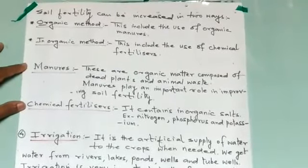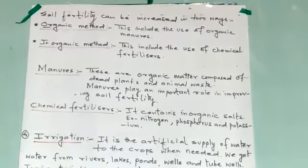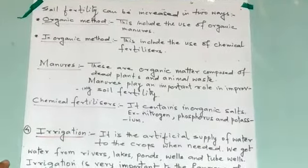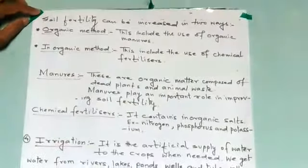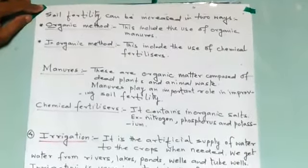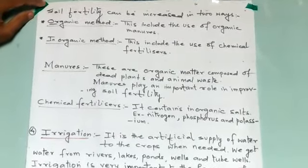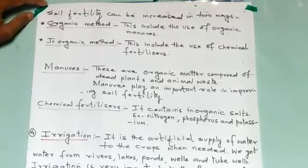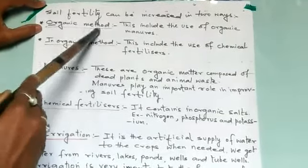Welcome students. In the previous video I told you about the method of cultivation — how the lost nutrients from the soil can be replenished. Soil fertility can be increased in two ways. I told you three methods: crop rotation, fallowing, and multiple cropping. These replenish the nutrients that have been lost by the soil. Now, two more methods are also used.